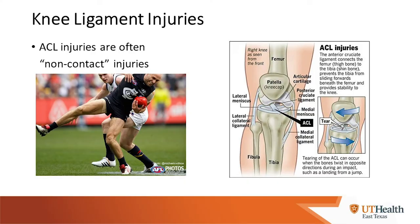ACL injuries occur usually as non-contact injuries — as you may have seen in a basketball or football game where someone plants their foot and turns their body, and their knee twists abnormally. It's generally not another player impacting the knee, but as graphically depicted in a rugby player image, a real twisting moment on the knee. You can see in the graphic that the ACL is situated in the middle of the knee, with arrows showing the femur twisting one way and the tibia another.